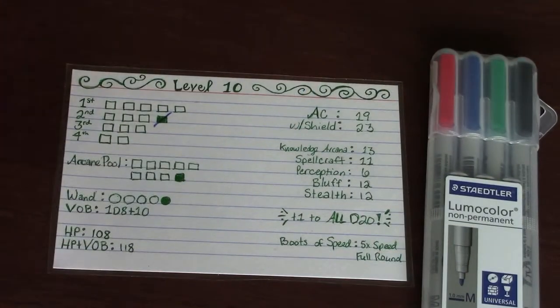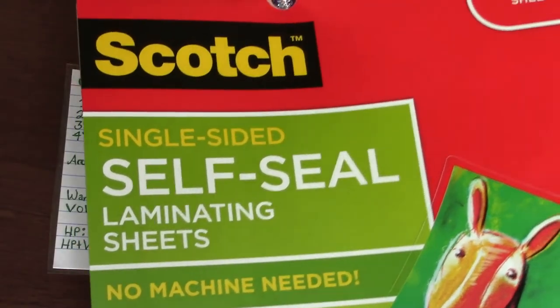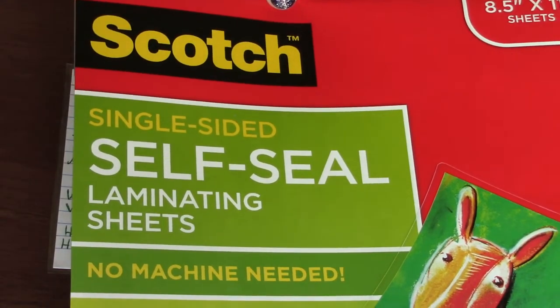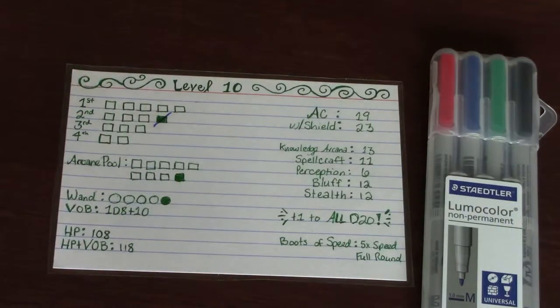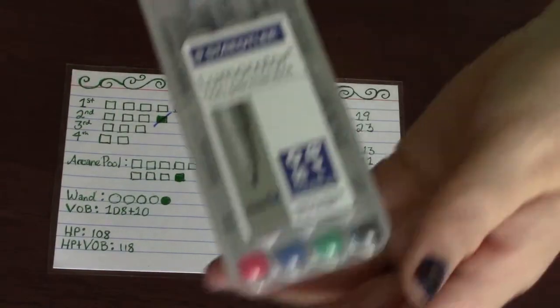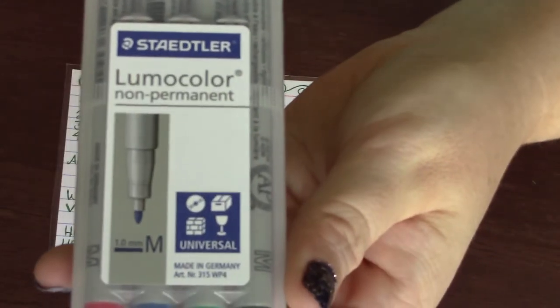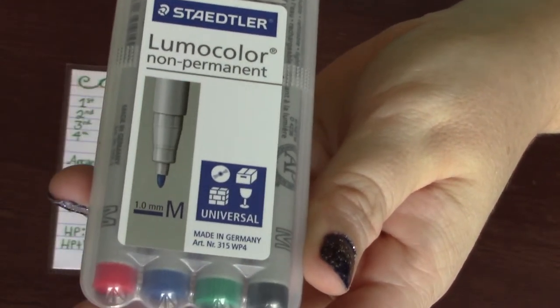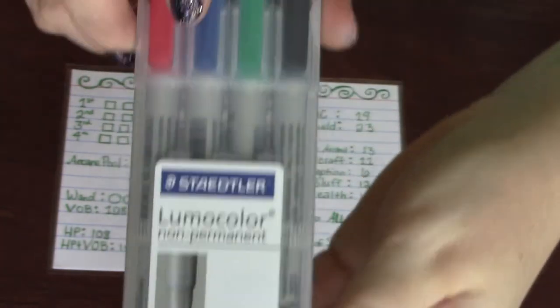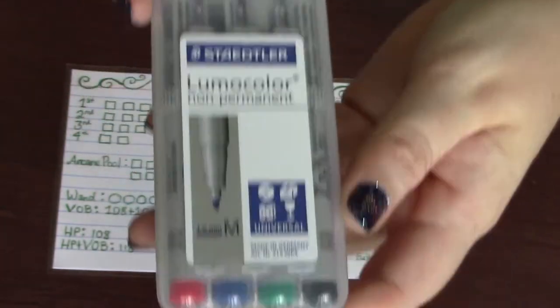So what I did on this is I got these self-sealing laminate sheets, so you don't need like an actual laminator. They're just big stickers, basically. And then I use these lead erase. You could use dry erase too, of course.